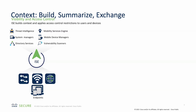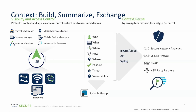PXGrid is used for a few common use cases. ISE has a rich amount of information available to it from endpoints, from users, from external identity stores, from vulnerability scanners, from directories, and more. With PXGrid, we are able to share this information with either other Cisco products or third-party products, or if you watch this session, you will learn how to develop your own code to do that.